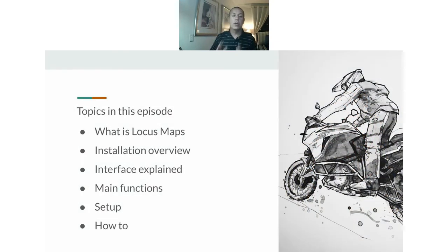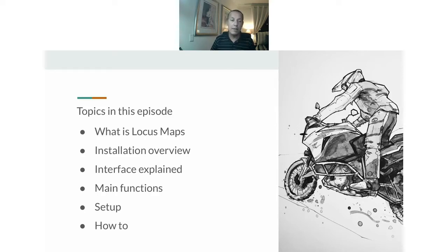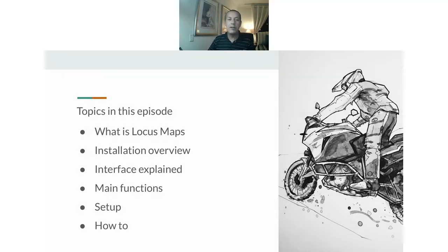So what is Locus Maps? Locus Maps is an Android-specific app — unfortunately it's not available for iPhone. It's an Android-based navigation app, very similar to others like Oruxmaps. There are lots of other apps out there like Maps.me, and I've used a lot of them, but I find that Locus, once it's set up, is probably the simplest and most straightforward one to use.